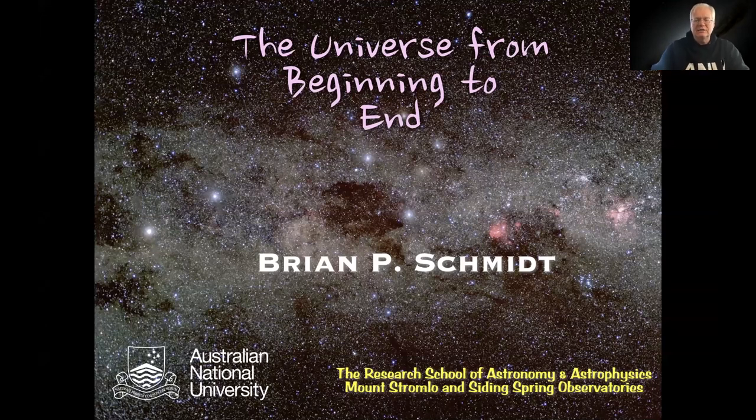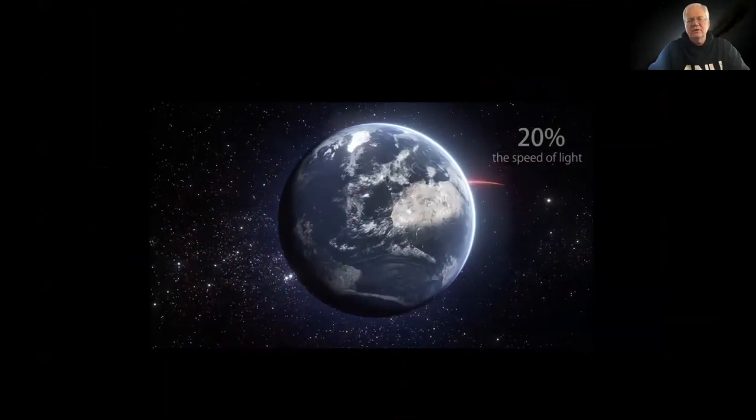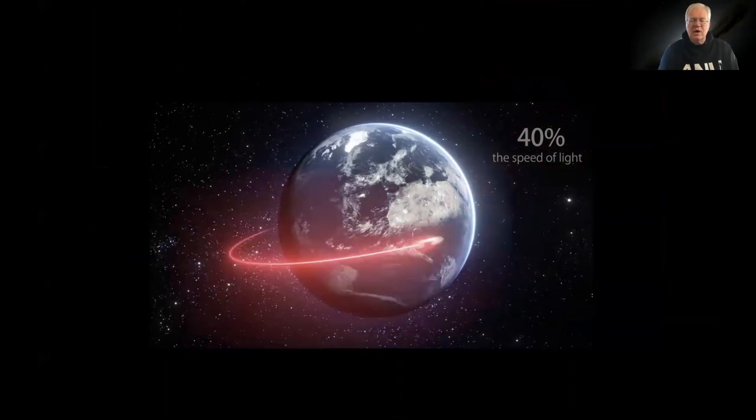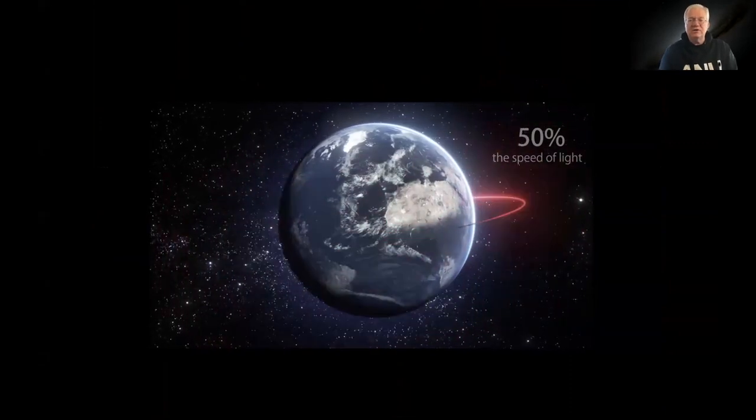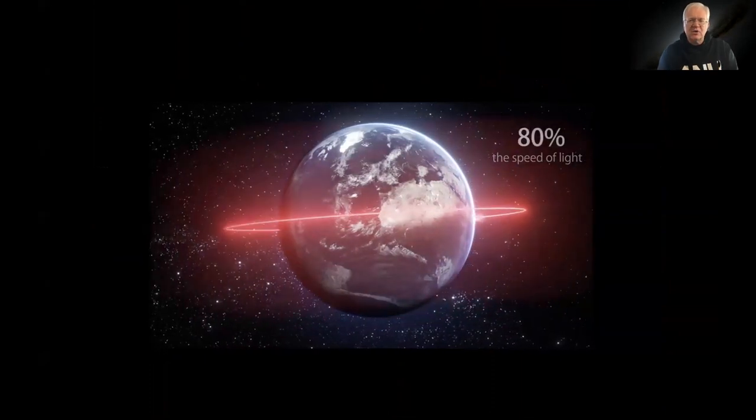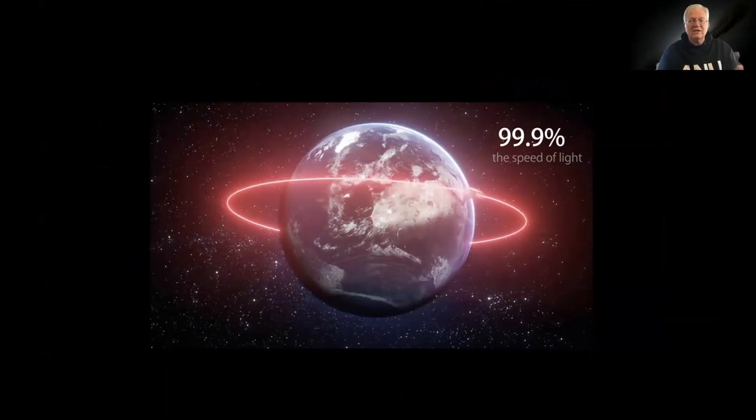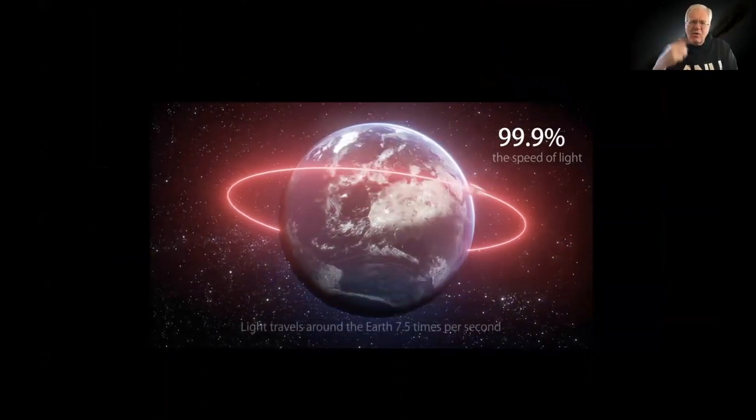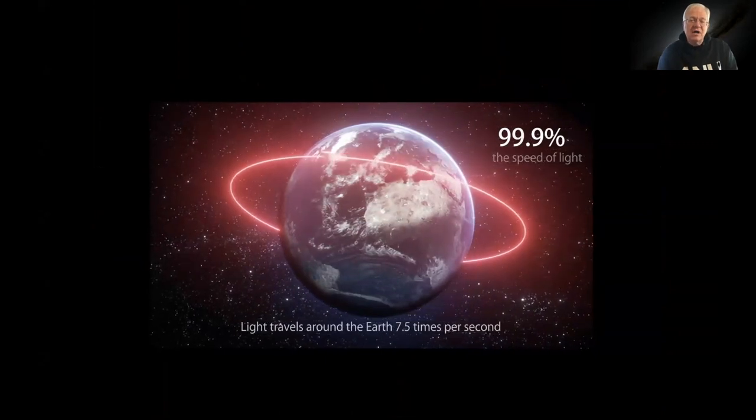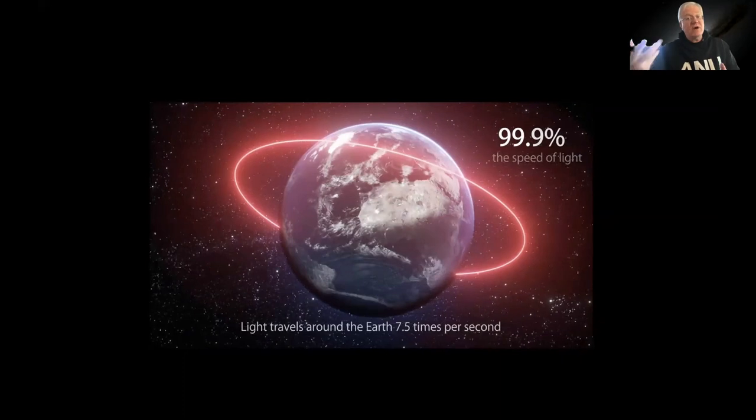The universe from beginning to end. Let's start off thinking about how we measure the universe. It turns out we use the speed of light as a way to understand how big the universe is. Light travels 300,000 kilometers in one second. That's fast but it's not so fast it's unimaginable. It means it can go around the earth about seven and a half times a second.